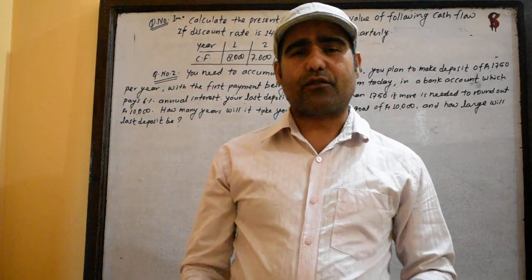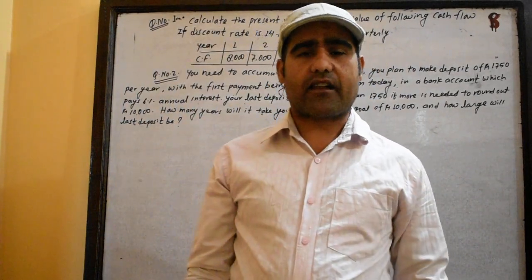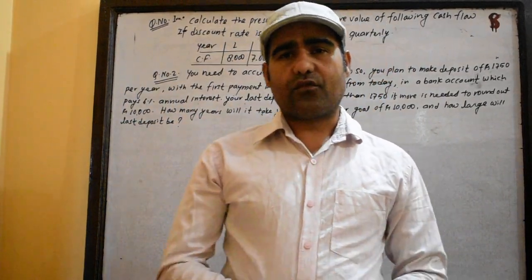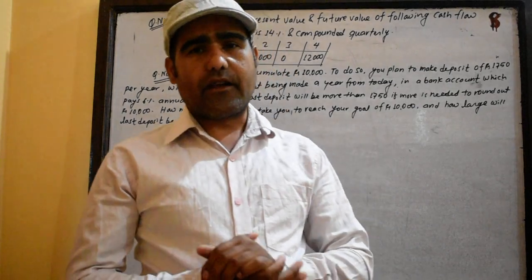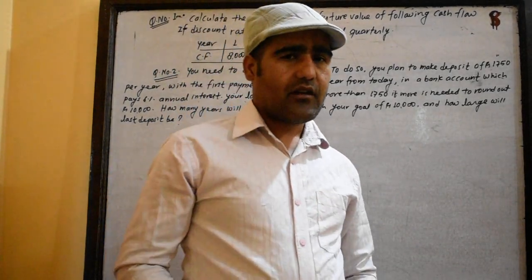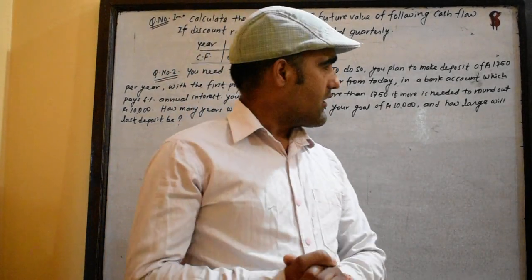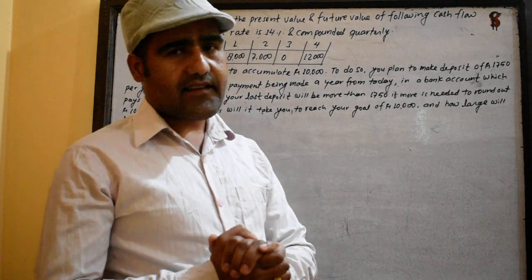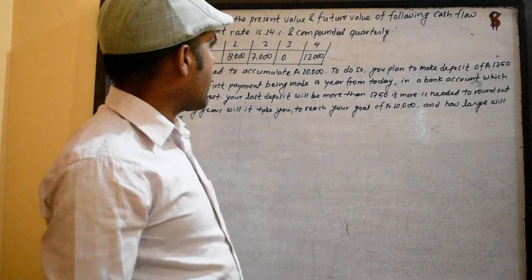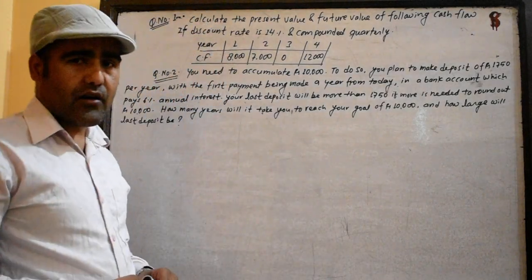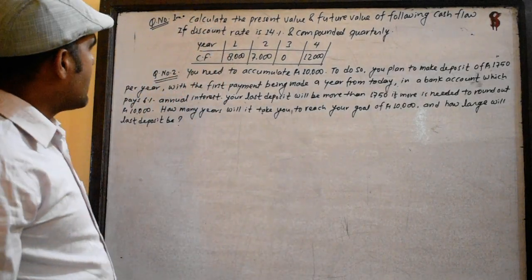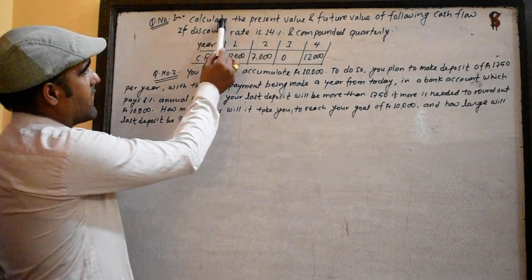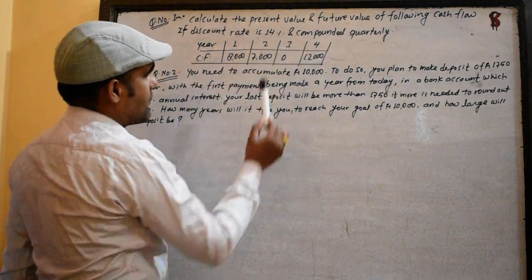This is the Bride Life Academy of Utilities Channel. I am going to cover time value in financial management. This is Part 7. Part 7 is to calculate the present value and the future value.